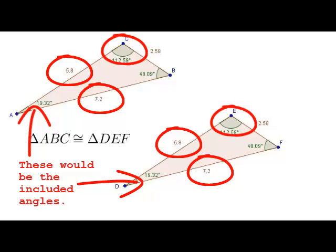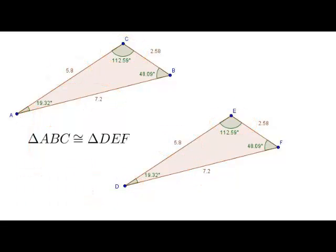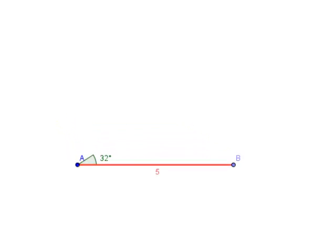So let's explore this situation. Here I have a side of five. I also have an angle measure of 32 degrees. And I'm going to construct a ray that represents all possible side lengths for this other side of the triangle.